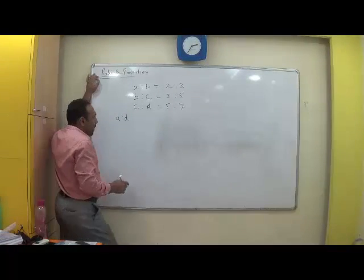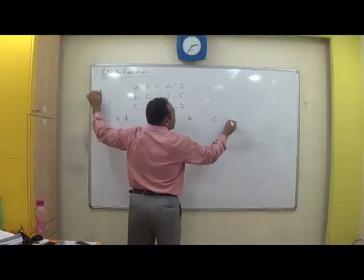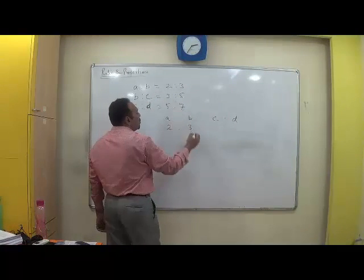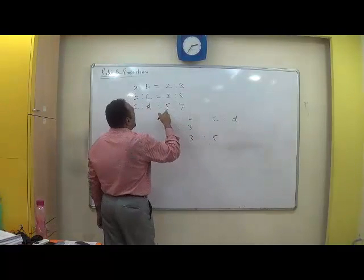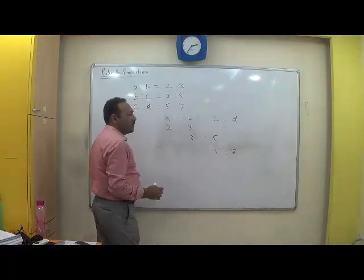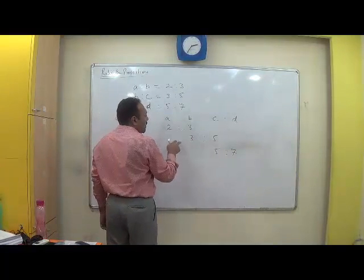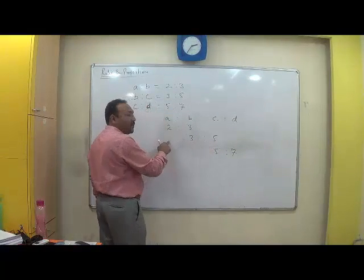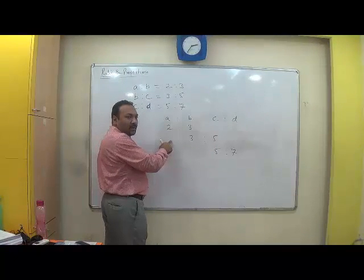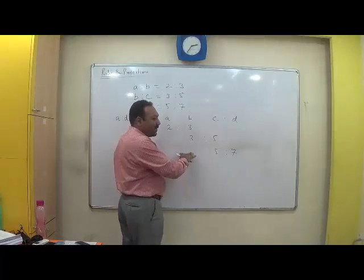So there are two ways to do it. I write A is to B is to C is to D. I know A is to B is 2 is to 3, B is to C is 3 is to 5, and C is to D is 5 is to 7. Once it is 2 is to 3, this is 3 is to 5. Can I transform the number from the first ratio to the second one? It is same. Same is true, 2 and 3 become common and they can be transferred here because 5 is normal.